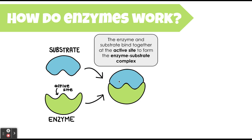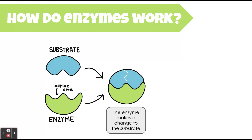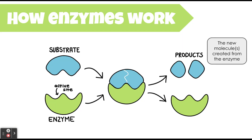When the substrate and enzyme join together, we call that the enzyme-substrate complex. Once in that complex form, the enzyme makes a change to the substrate, and then the new molecule or molecules created are released. Enzymes speed up chemical reactions because without an enzyme, the substrate would never be changed — it makes the change happen much faster than it would without the presence of an enzyme.